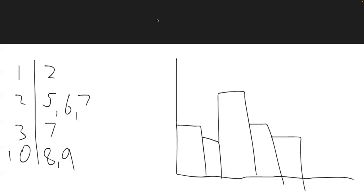Here's an example. The thing on the left is a stem and leaf plot. The actual data here is 12, 25, 26, 27, 37, 108, and 109. On the right we have a histogram. On the x-axis it shows the ranges of the quantitative variable, and on the y-axis is the frequency.